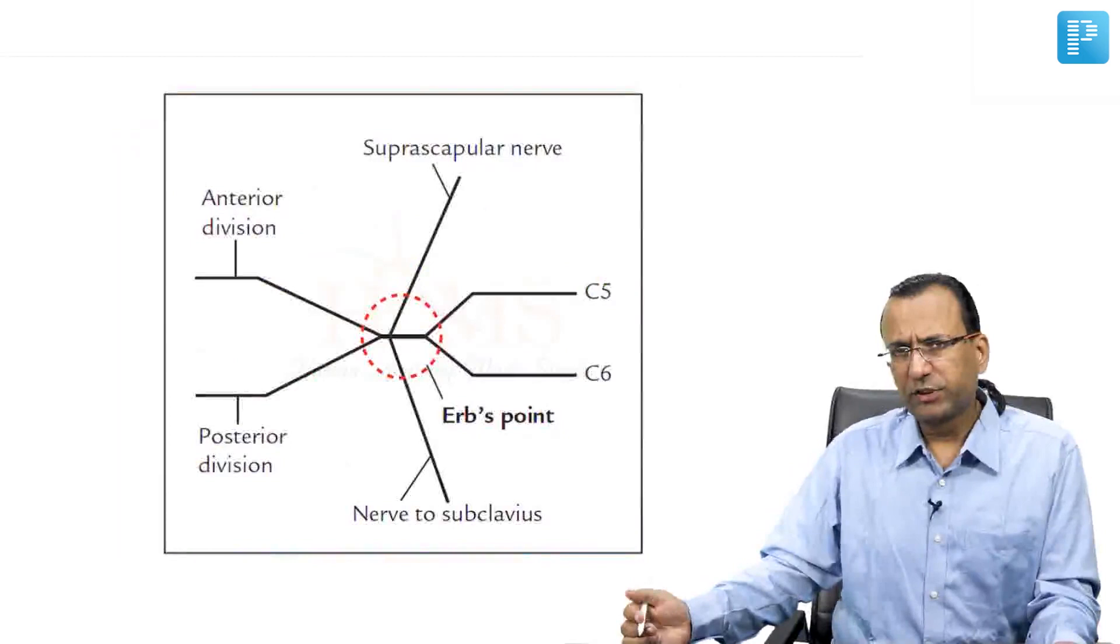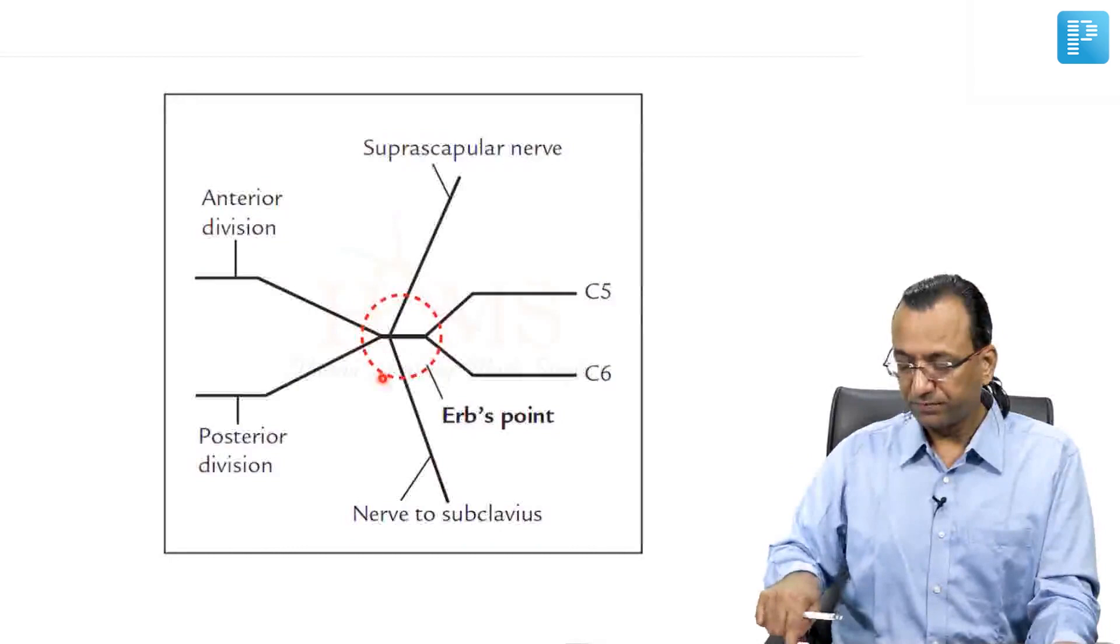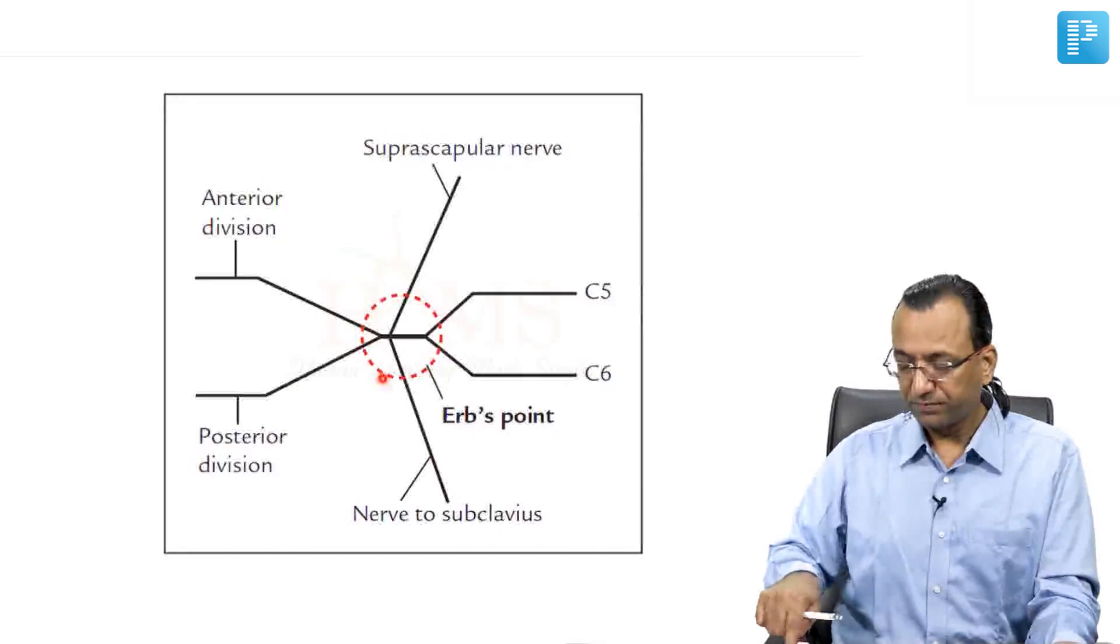So this is Erb's Point, which is root of C5, C6, and then you have suprascapular nerve, nerve to subclavius, and then you have anterior division and posterior division of the upper trunk. It is the territory of upper trunk. If it is involved then there will be Erb's Palsy where the root value C5, C6 injury. Muscles with C5, C6 will be paralyzed.